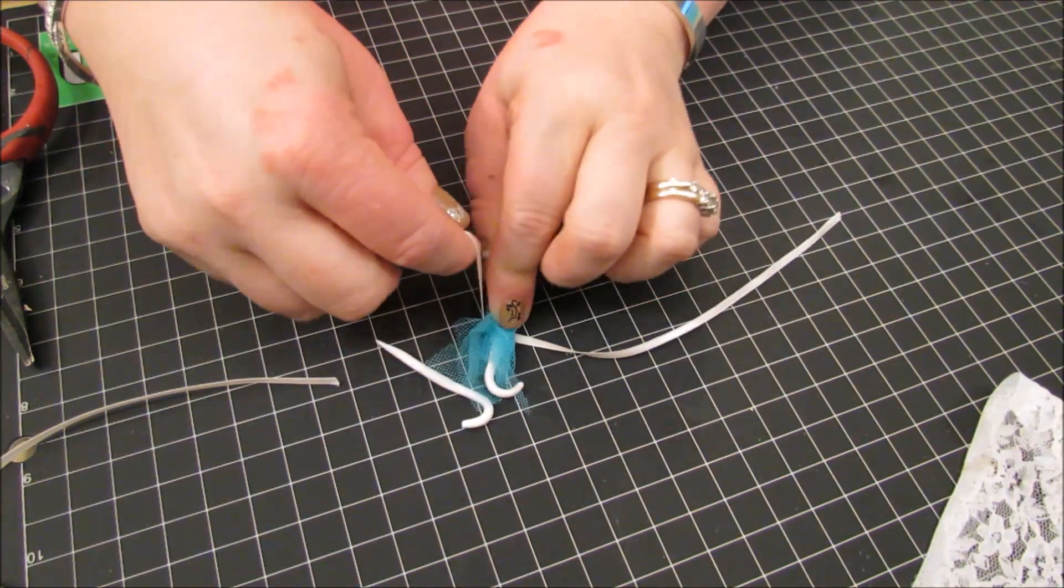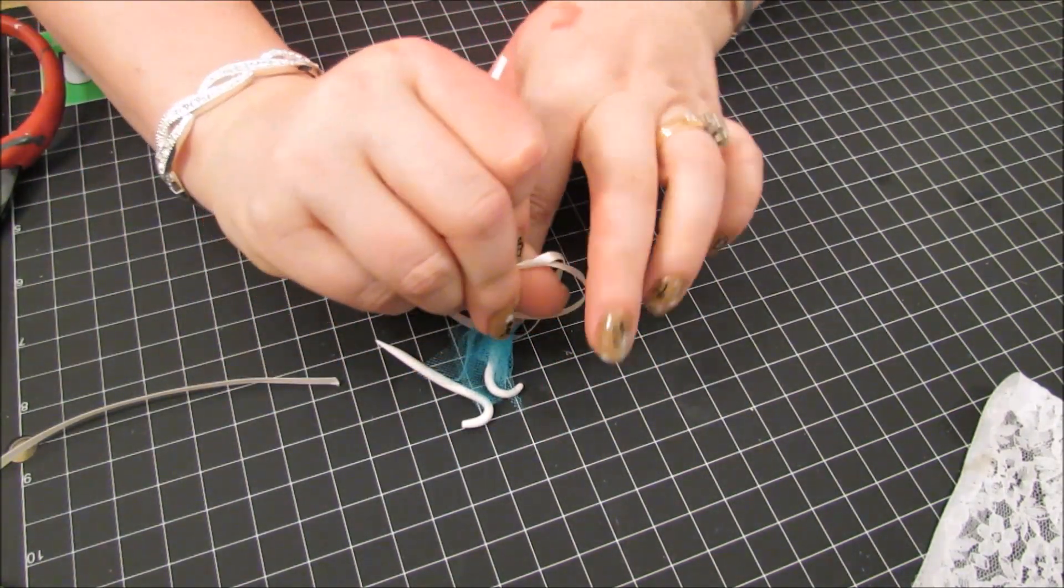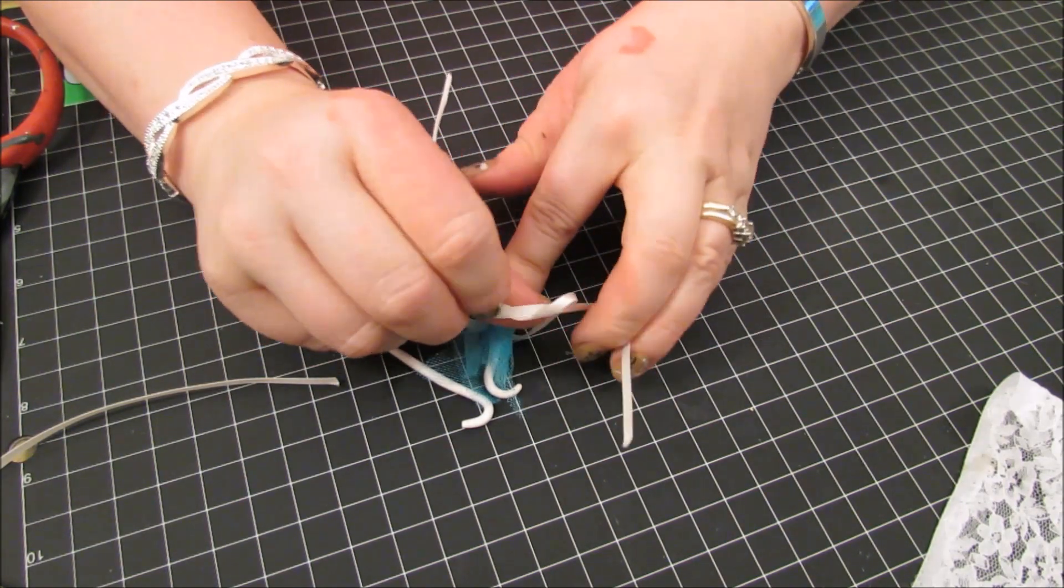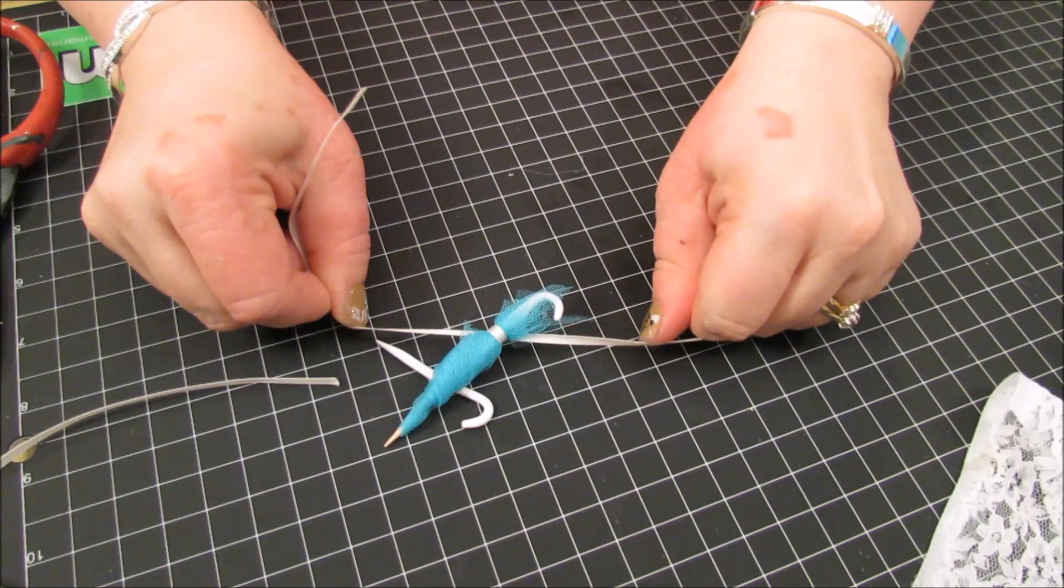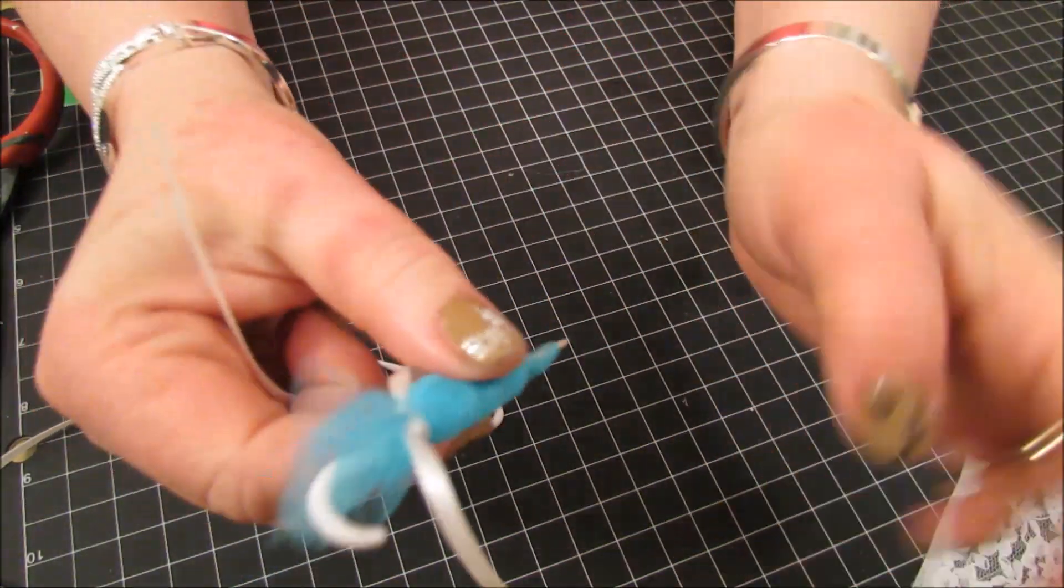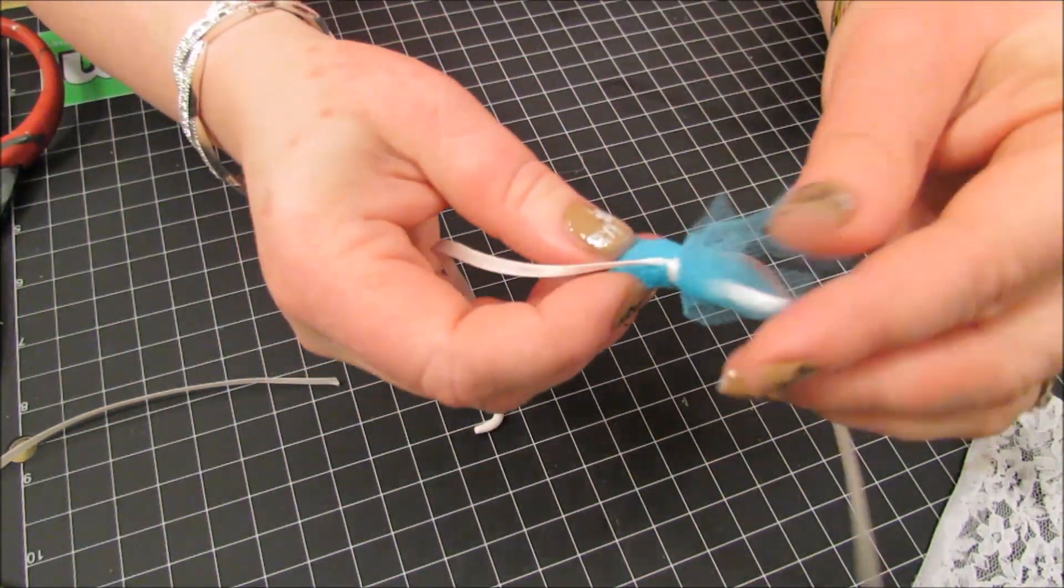And this is where it gets a little tricky. You kind of got to use, sometimes I use my teeth. And tie it close to the, there we go. See? So now that's all secure in there. And I got a lot to use. Sometimes I don't mess with doing a bow.